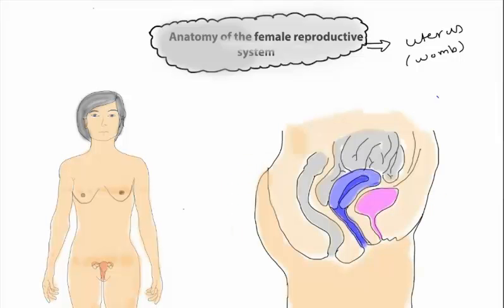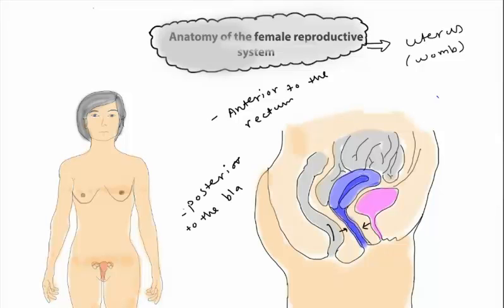Regarding the situation of the uterus, the uterus is situated anteriorly to the rectum and posteriorly to the bladder.